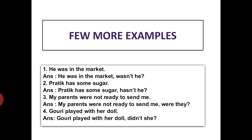Second sentence: 'Pratik has some sugar.' Write the sentence as it is. The sentence is positive, so the question tag must be negative. The associative verb is 'has,' which becomes 'hasn't.' For Pratik, the pronoun will be 'he.' Put a question mark at the end: 'hasn't he?'